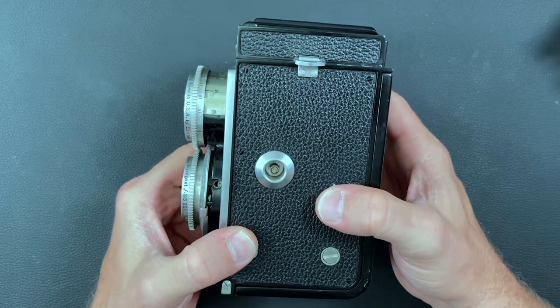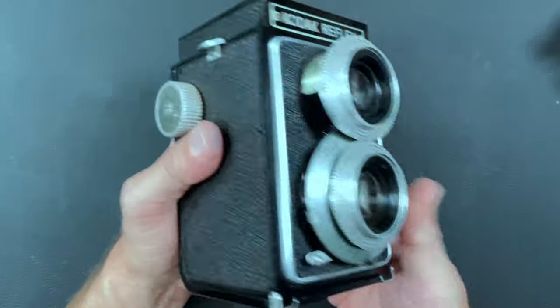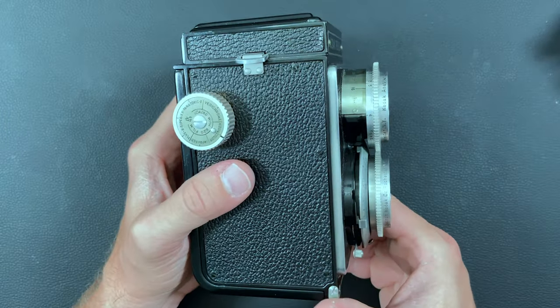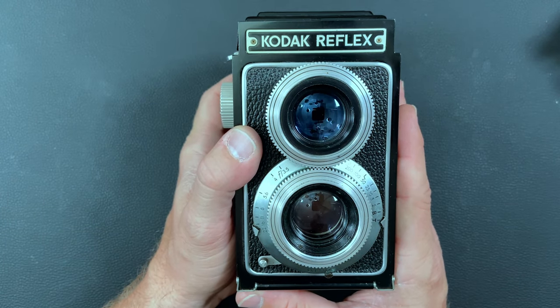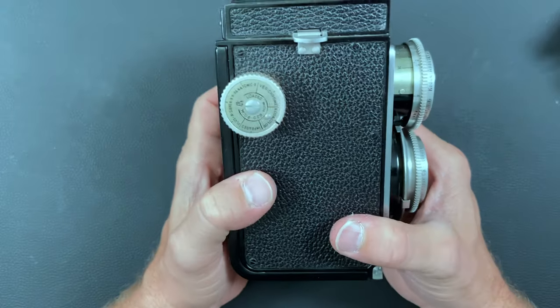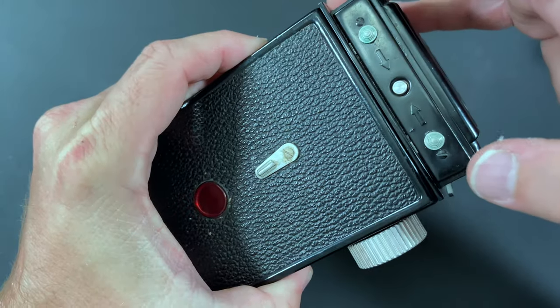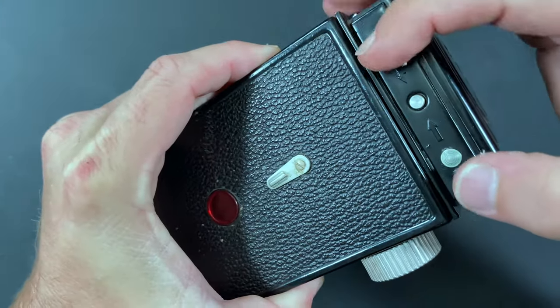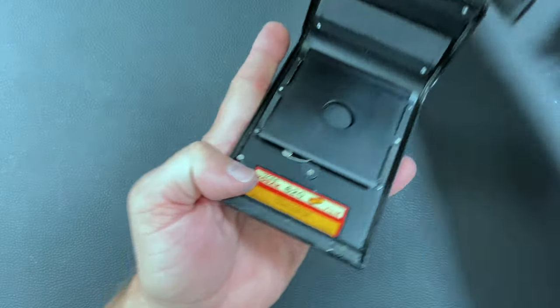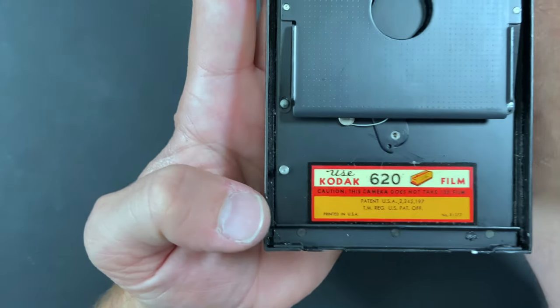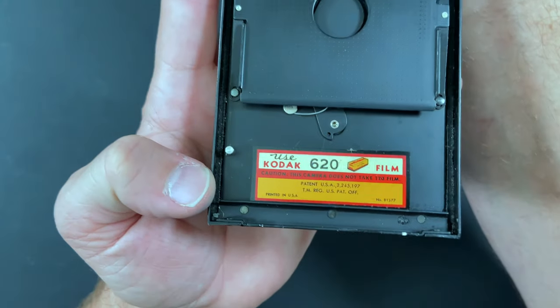It's one of Kodak's very first TLR cameras. They had a couple different ones, but this guy was the first one. It used Kodak 620 film, which you push these two little levers in and it releases the back.